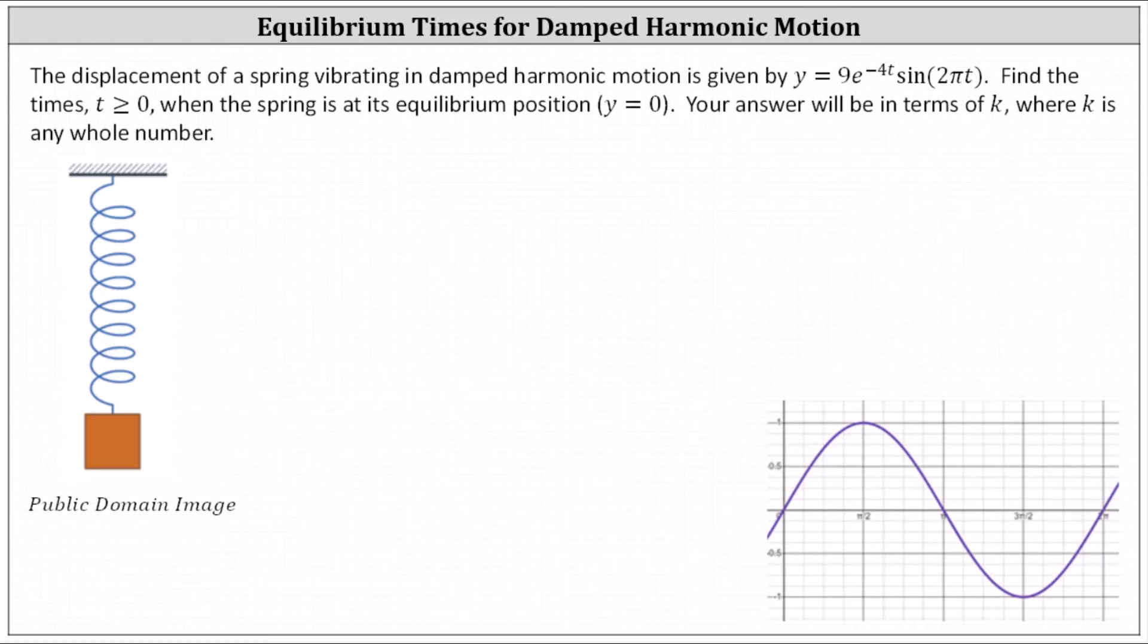The displacement of a spring vibrating in damped harmonic motion is given by y equals nine times e to the power of negative 4t times sine of 2πt. We want to find all the times t greater than or equal to zero when the spring is at its equilibrium position, which is y equals zero.